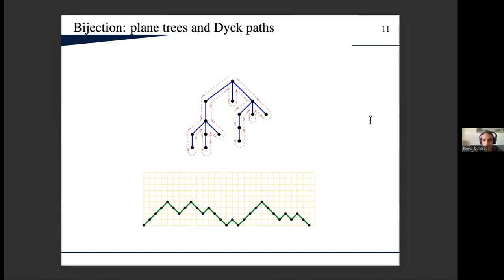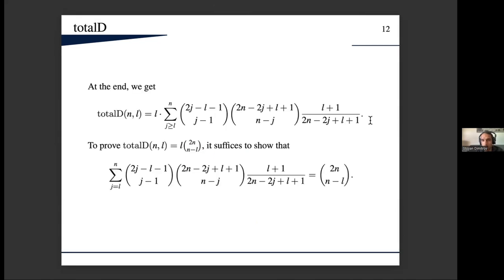What we do here in this proof is to map every such tree to the corresponding Dyck path. We also observe that a node in our tree at level l corresponds to a point on level l in the Dyck path. With some additional observations, we basically showed that total D is given by this expression, and then to prove our claim it suffices to show this identity here.